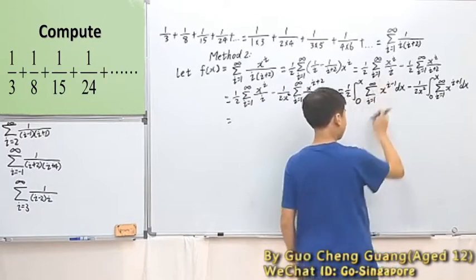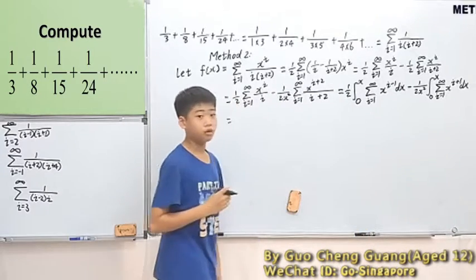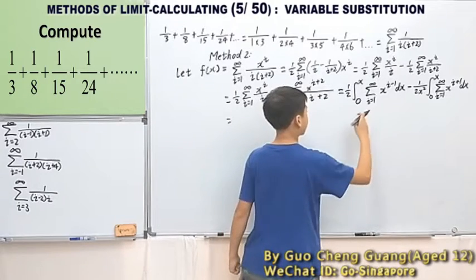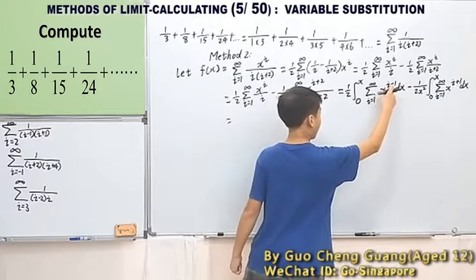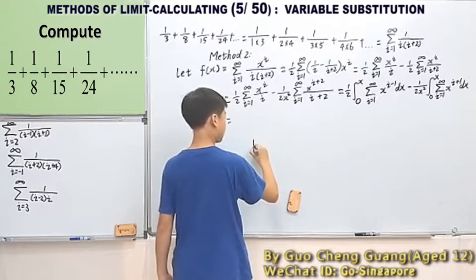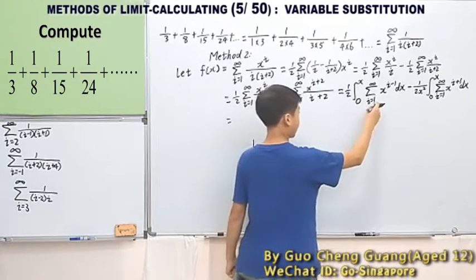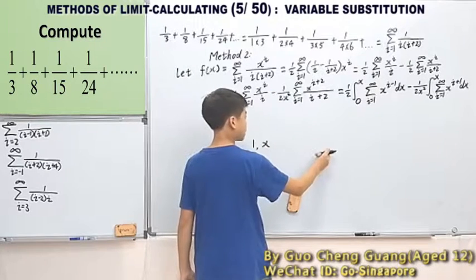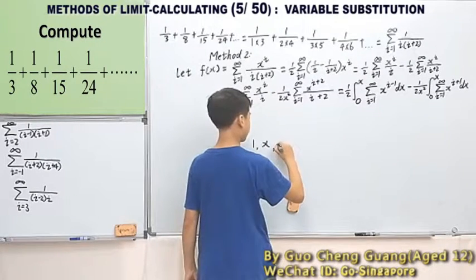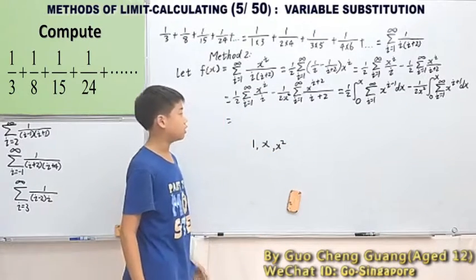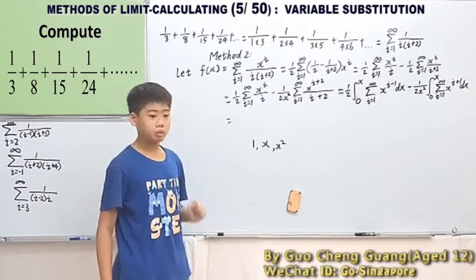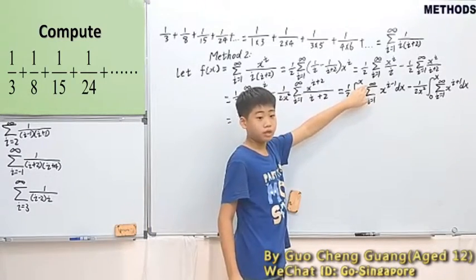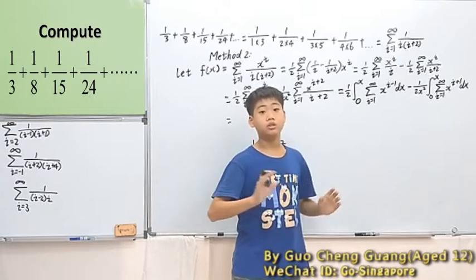When you look at this sigma, what do you think of? Well, it is actually a geometric progression. You can test it — when i starts at 1, it becomes 1. Then i equals 2, it becomes x. Then x squared. Just going on like that. So it's a geometric progression. But be careful — this is all the way until infinity, so it goes on and on nonstop.